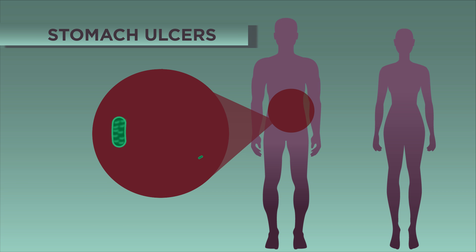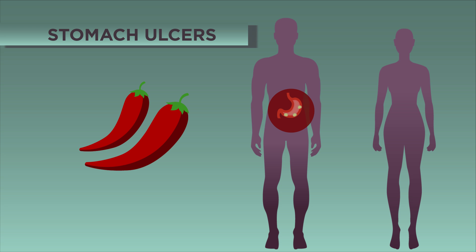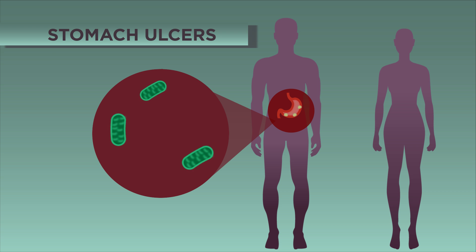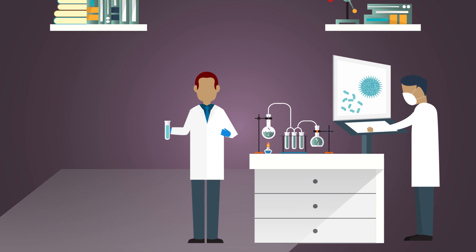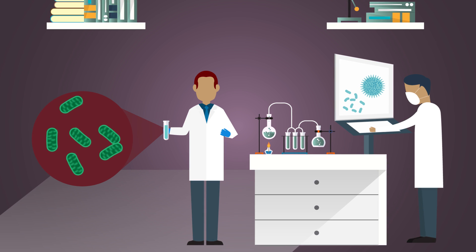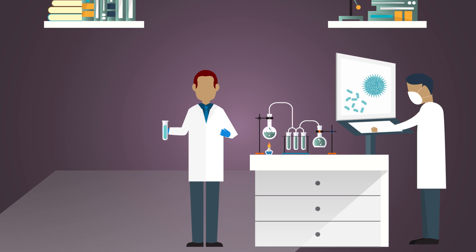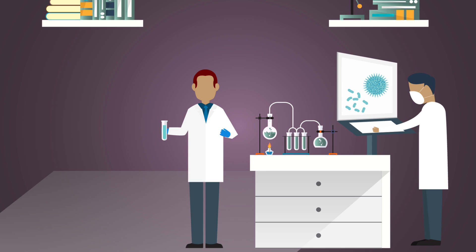Another disease caused by bacteria is stomach ulcers. A burning pain in the stomach could be a sign of a stomach ulcer — these are an open sore on the stomach lining. It used to be thought that stomach ulcers were caused by the stomach producing too much acid, brought on by eating spicy food or stress, but we now know that in fact they can be caused by an infection with Helicobacter pylori bacteria. The discovery was made in 2005 by two researchers. To provide evidence, one of the scientists infected himself with the bacteria to prove that it caused stomach ulcers — now that is dedication to their work.